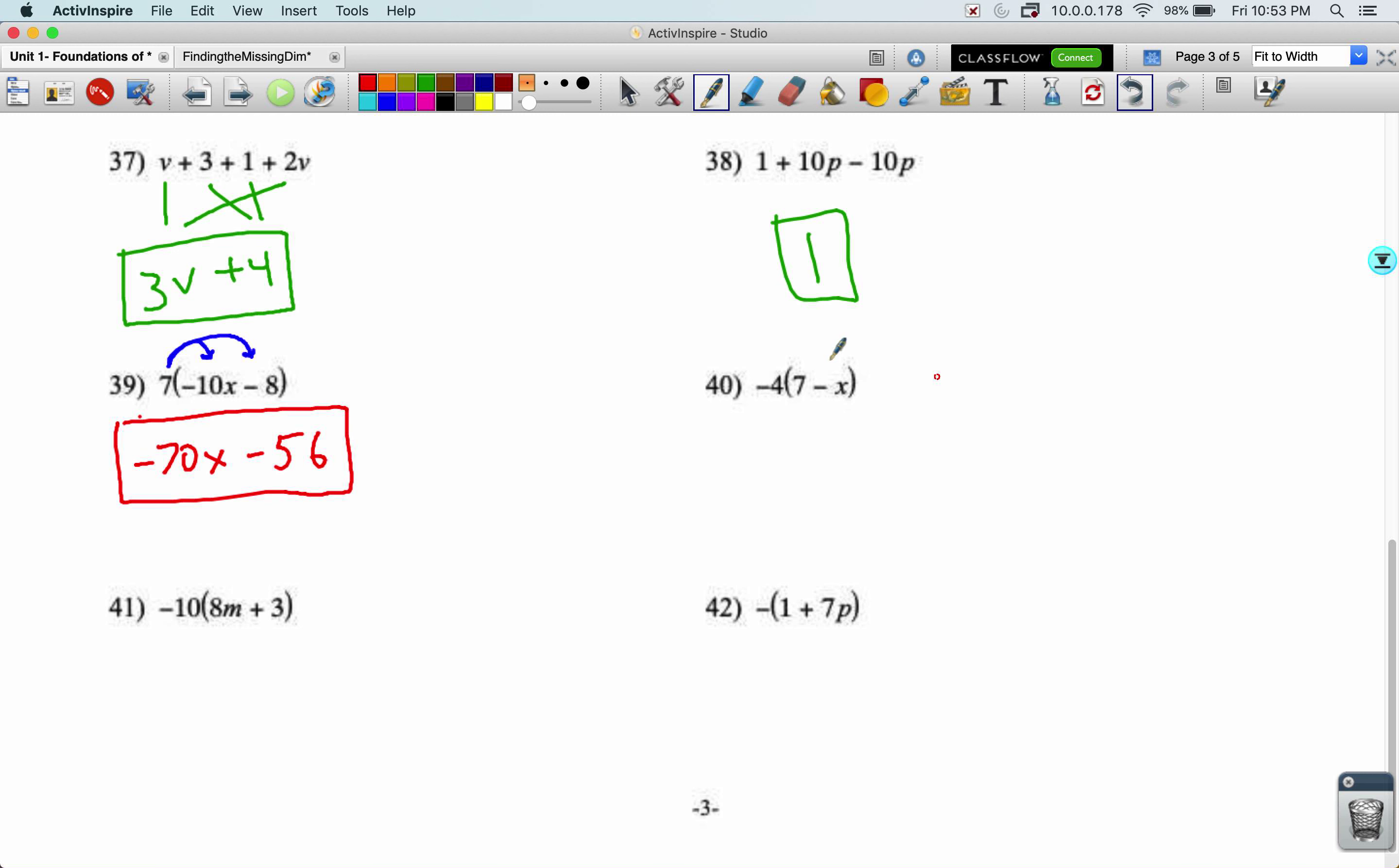Negative four times seven minus X. I'm going to distribute in that negative four. Negative four times seven is a negative 28. Negative four times the negative X becomes a positive four X. And then I want to rearrange this so that the constant is at the end. Four X minus 28.